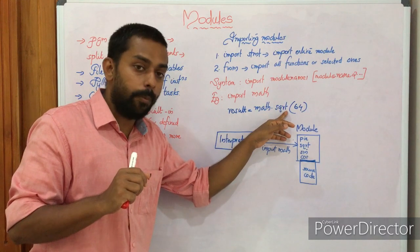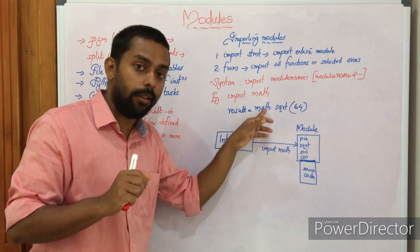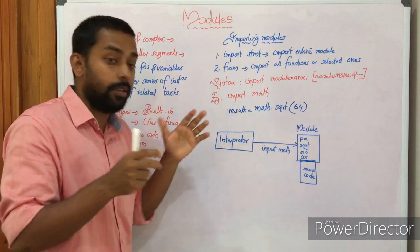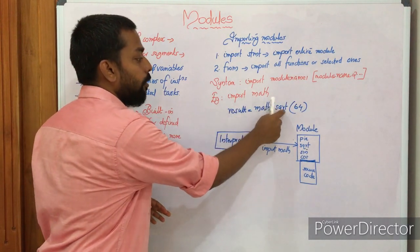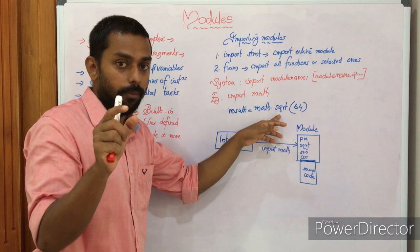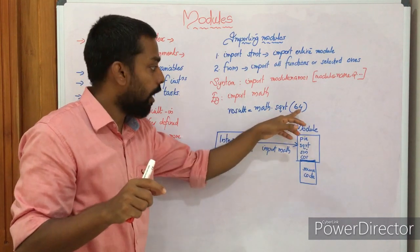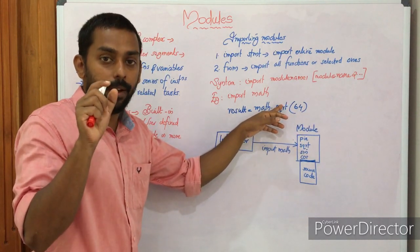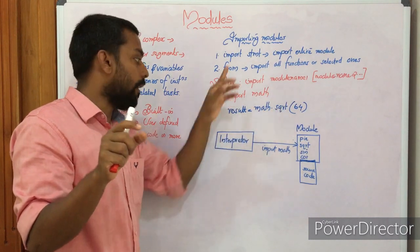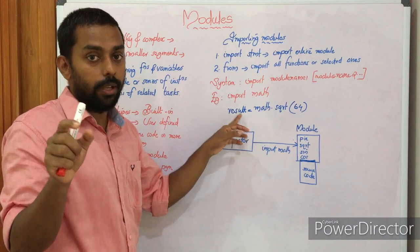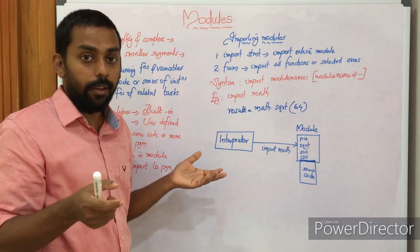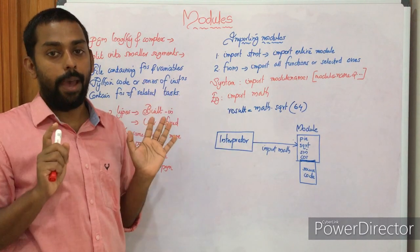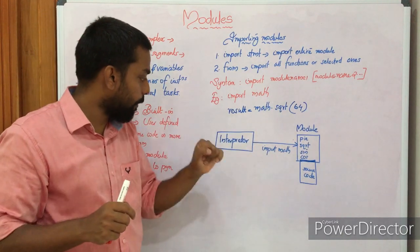Here is the module name first: math, followed by the function name sqrt, separated by dot, and we pass the parameter. For example: result = math.sqrt(64). We know sqrt is a function available in the math module. Sqrt finds the square root of 64 and assigns the result to 'result'. The result is 8. This is how the sqrt function works when it is part of the math module.